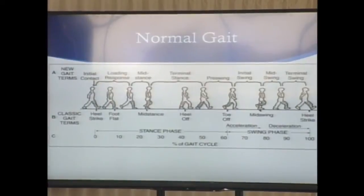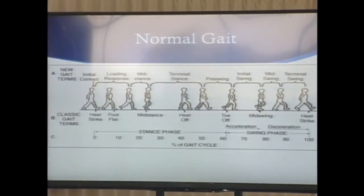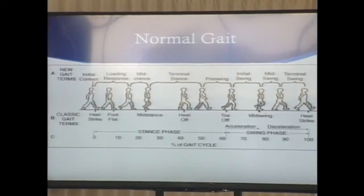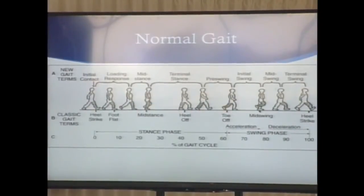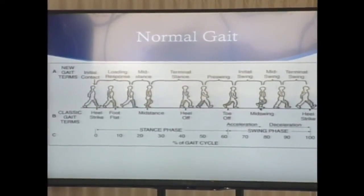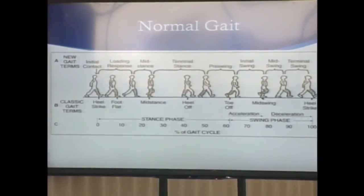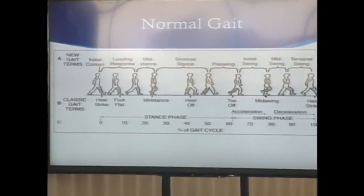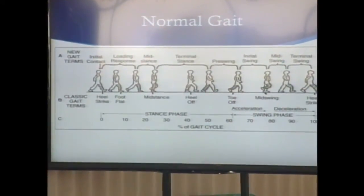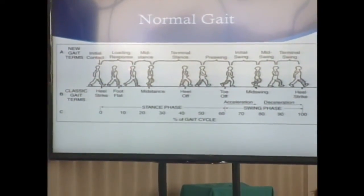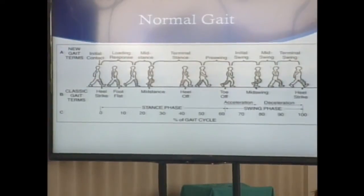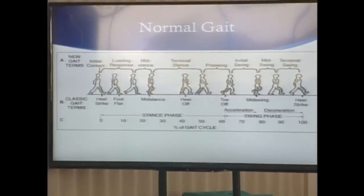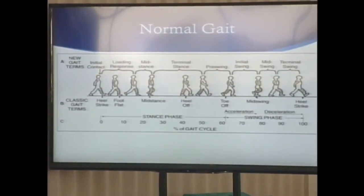For our purposes, we know that there's a stance phase and a swing phase. Normal gait — there's always at least one foot on the ground, and it goes from the heel strike of one leg until that heel strikes the ground again.